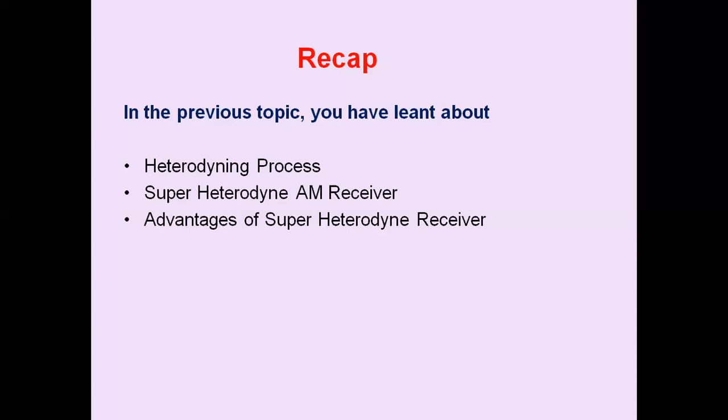The IF amplifier receives the mixer output and amplifies it using a chain of two or more fixed-frequency amplifiers, providing most of the gain and bandwidth requirements. The detector recovers the original message signal from the modulated IF signal and also supplies DC bias to the RF and IF stages as automatic gain control. The detected signal is applied to the audio amplifier for sufficient voltage amplification, then to the power amplifier to raise the power level, and finally to the loudspeaker, which reproduces the original sound transmitted from the transmitter.